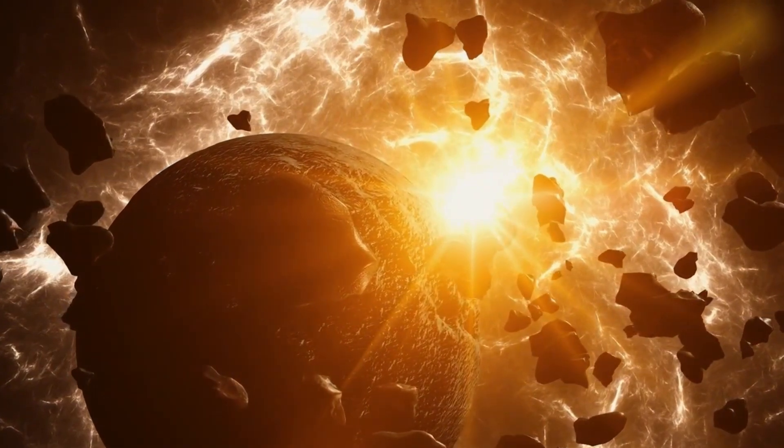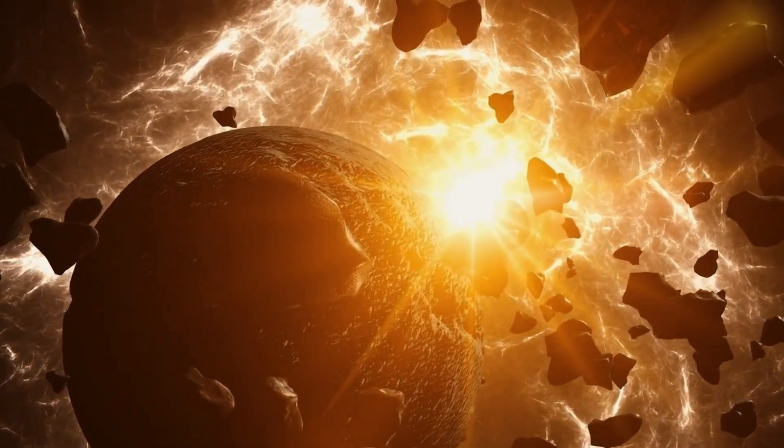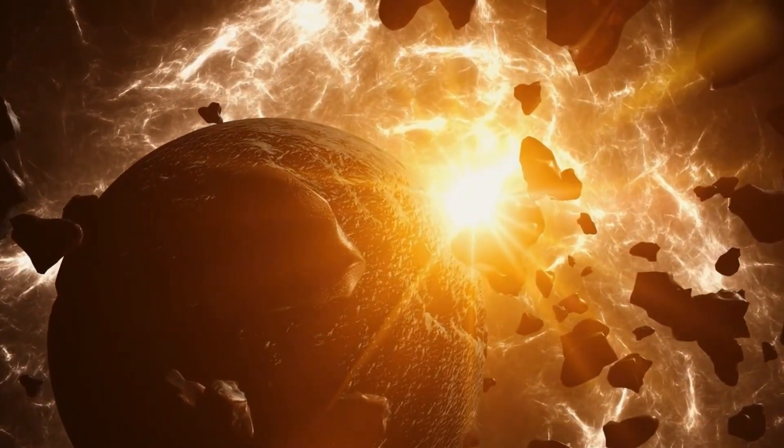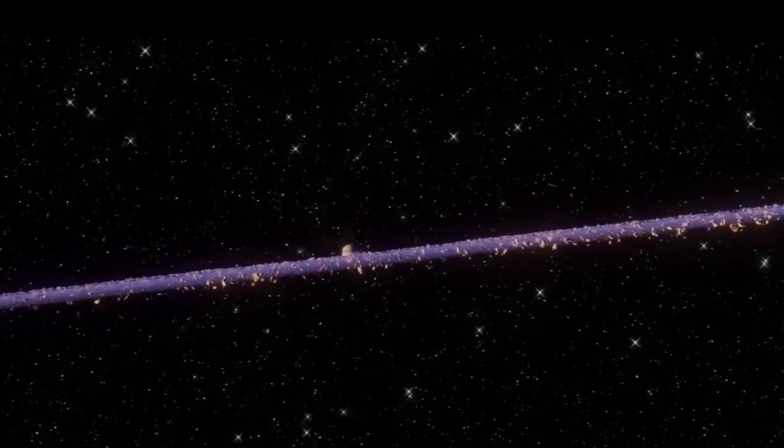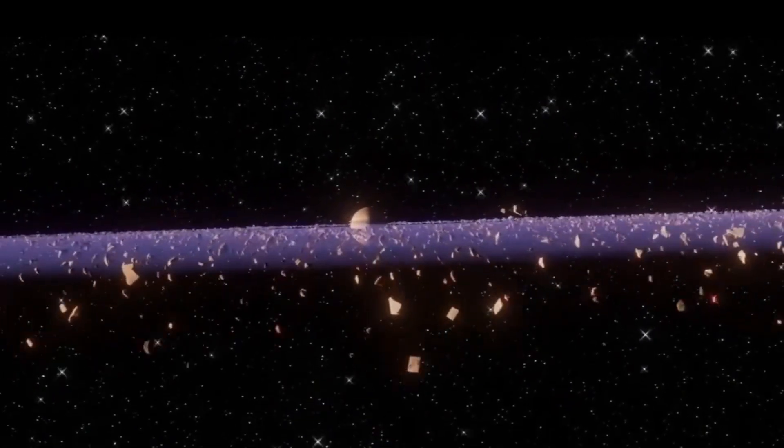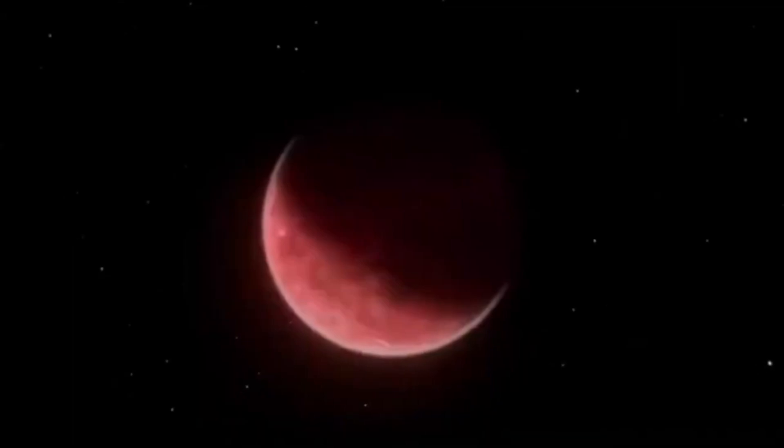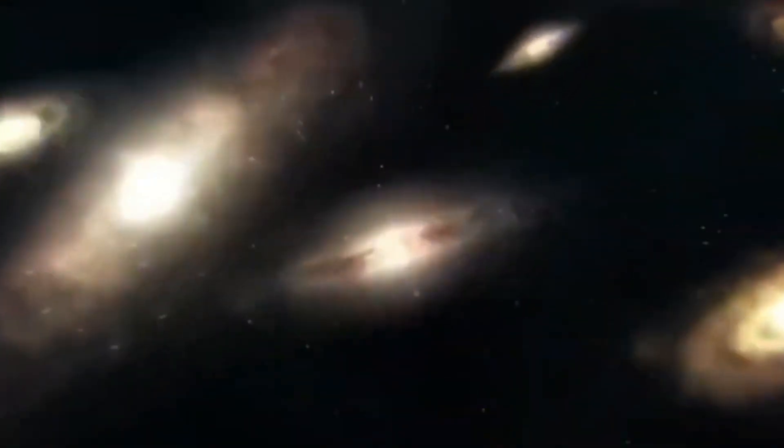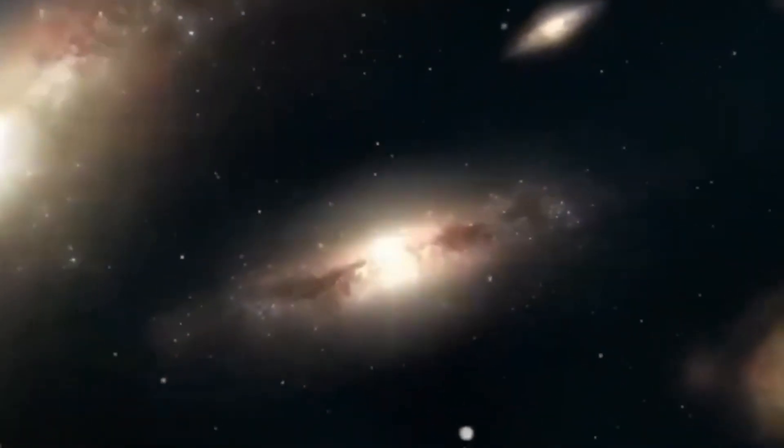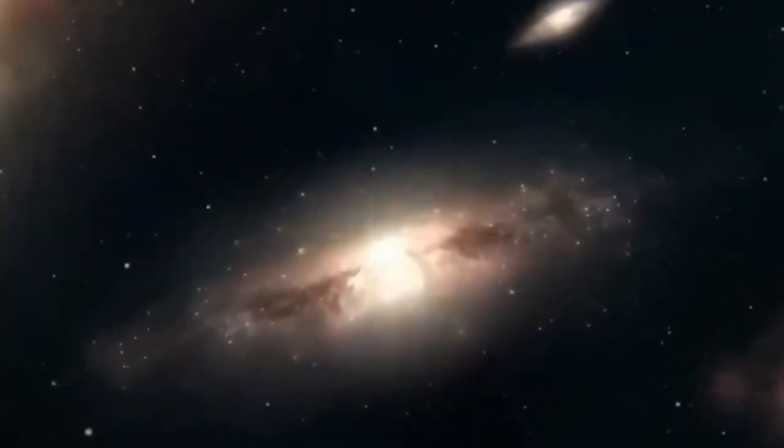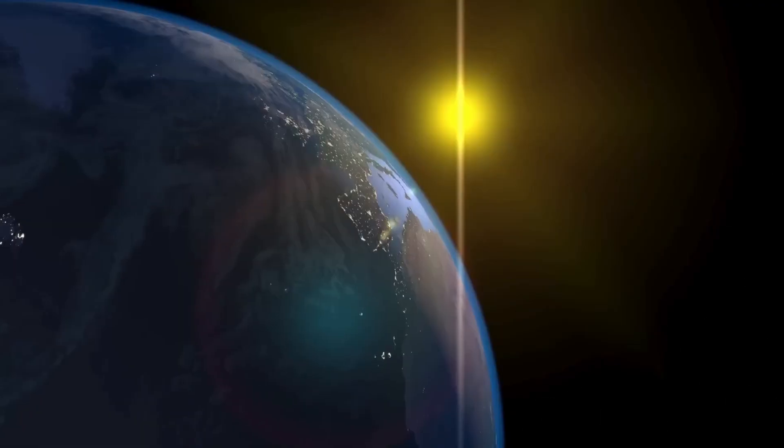Proxima Centauri, a red dwarf star 4.25 light-years from the Sun, is another candidate for finding potential city lights beyond our solar system. Proxima Centauri is about 600 times fainter than the Sun, so a planet must be much closer to it to have conditions suitable for life. In August 2016, astronomers discovered Proxima b, a planet in the habitable zone of Proxima Centauri.